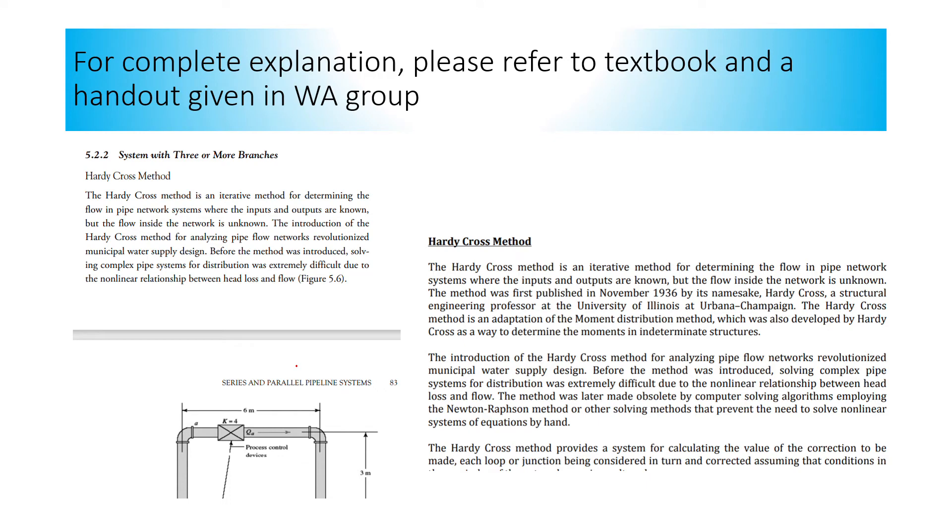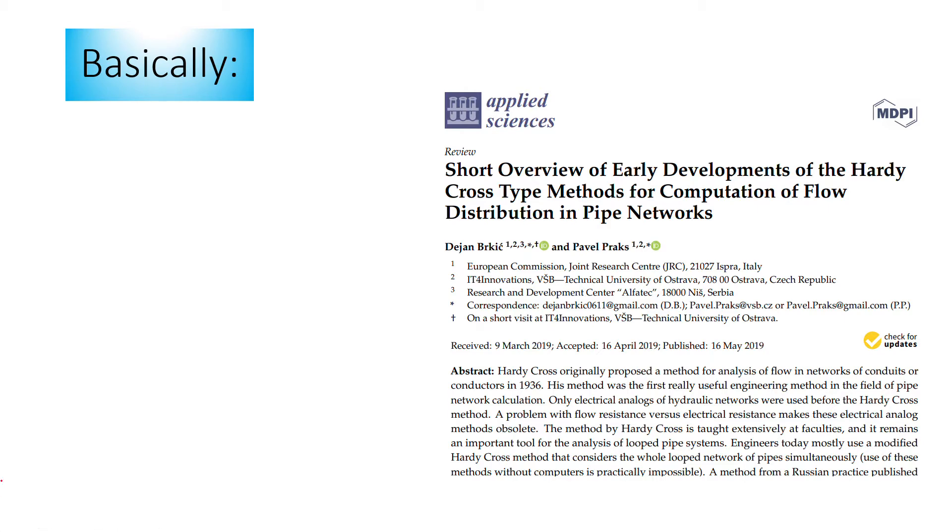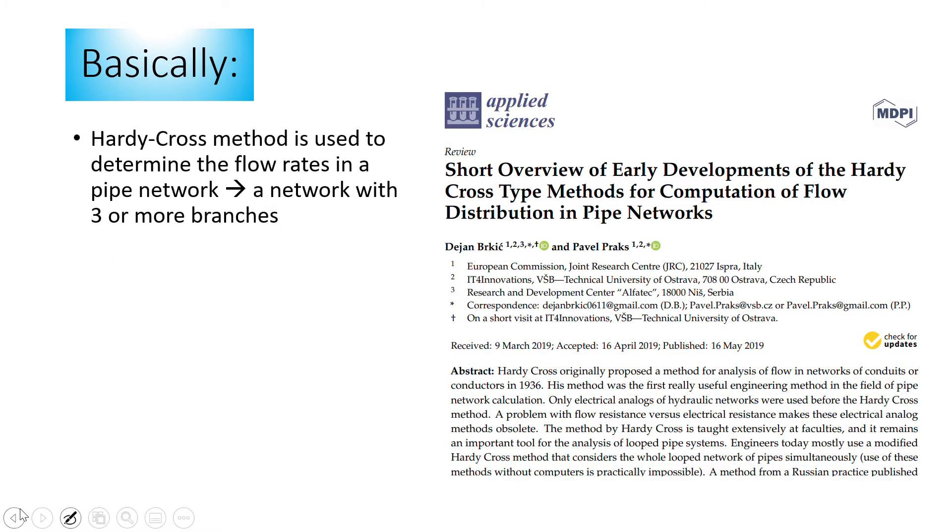For this lecture, for complete explanation please refer to the textbook and handout given in WhatsApp group. Basically, what is Hardy Cross Method? This method is used to determine the flow rates in a pipe network. So pipe network is a network with three or more branches.